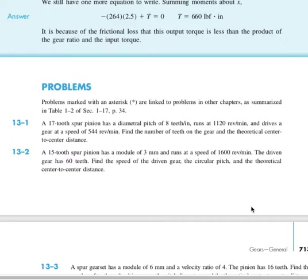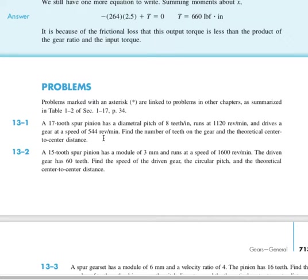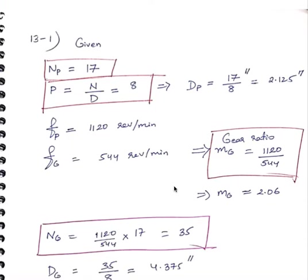Let us now solve a few problems related to the geometric and force aspects of gear design. The first problem is 13-1. What is given is a spur pinion with 17 teeth, a diametrical pitch of 8 teeth per inch, running at 1120 rpm, driving a gear at 544 rpm. The smaller of the two mating gears is called a pinion and the larger is called a gear. We are asked to find the number of teeth on the gear and the theoretical center-to-center distance.